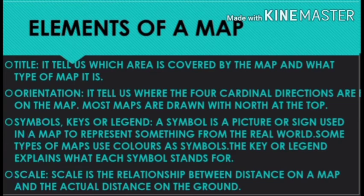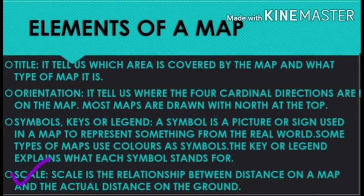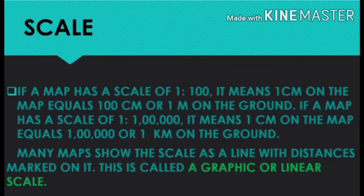The next element of a map is scale. It is impossible to show real-world features or distances on a map as they truly are, so maps are always made to a specific scale. Scale is the relationship between distance on a map and the actual distance on the ground. For example, if a map has a scale of 1:100, it means 1 cm on the map equals 100 cm or 1 m on the ground. If the scale is 1:1,00,000, then 1 cm on the map equals 1 lakh cm or 1 km on the ground.